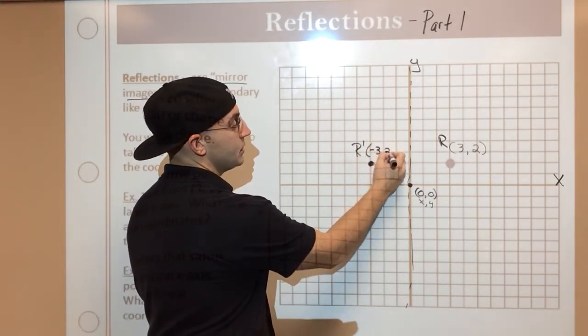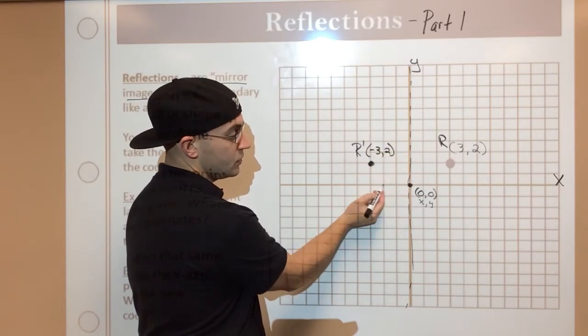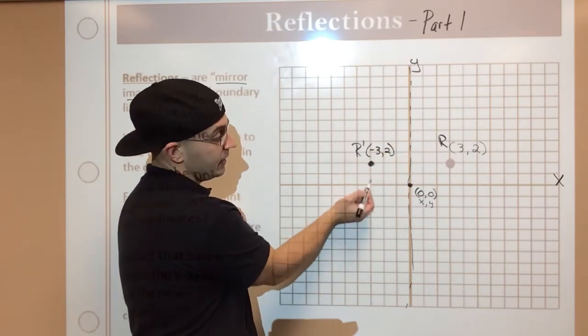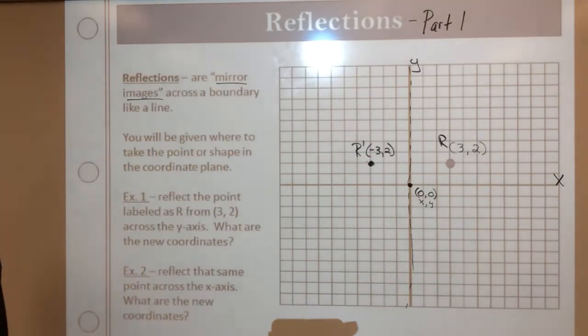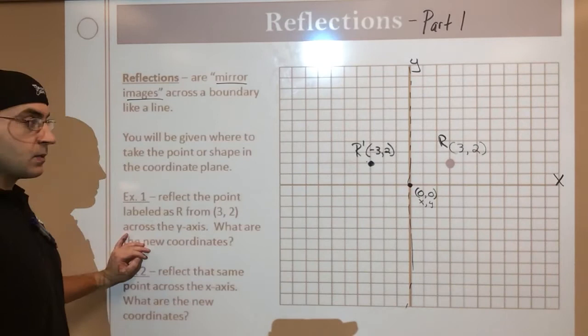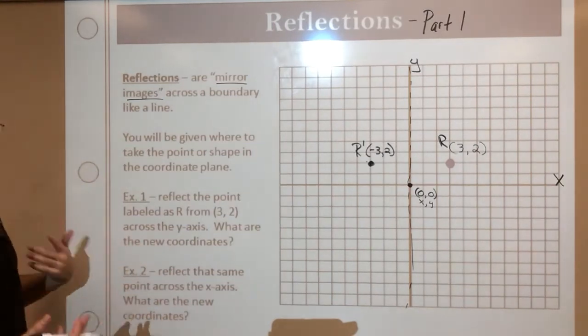So it's negative 3, 2 now because I went from the origin 1, 2, 3 to the left, which is my negative, and then up 2. So that's how I reflect that point across the Y-axis. Make sure you identify the new coordinates as well because if you don't, I don't know what you're doing.